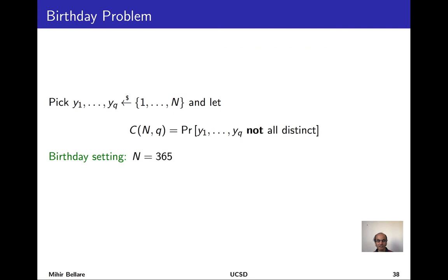One might ask intuitively why the naive intuition — that the birthday collision probability is something like Q divided by 365 — is incorrect. The highest-level intuition is that naively one tends to mix up two questions. One question is: given a room of Q people, what is the probability that one of them has the same birthday as me? That probability does grow linearly in Q. But that's not what we're asking. We're asking: what is the probability that there exist some two people, any two, that have the same birthday? That probability is higher because there are so many different choices for that pair.